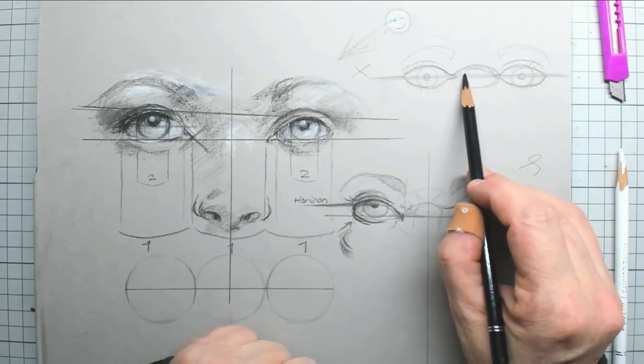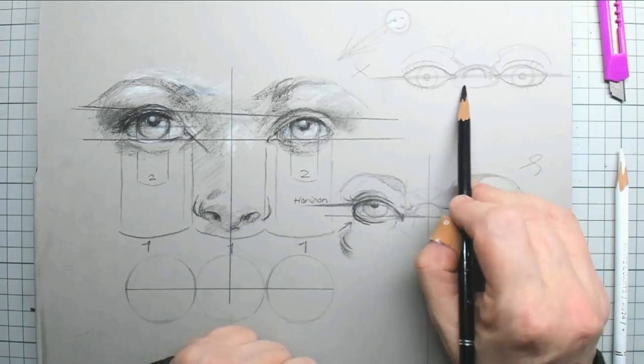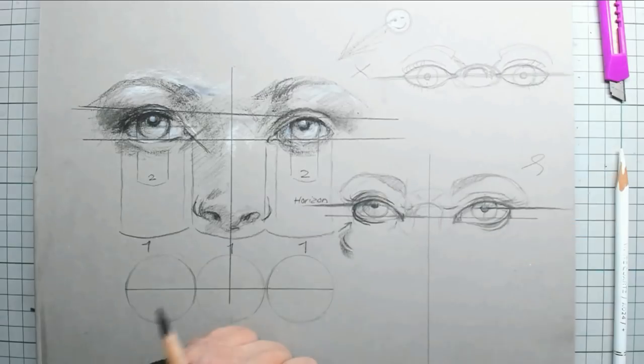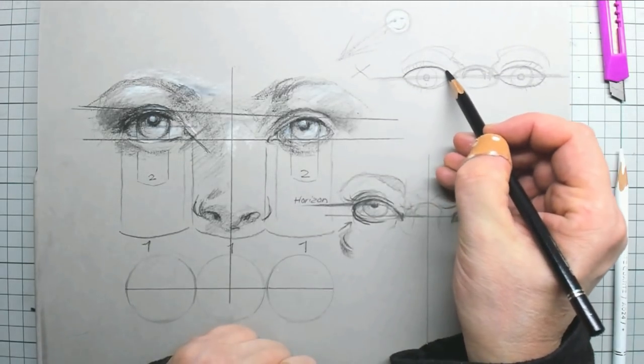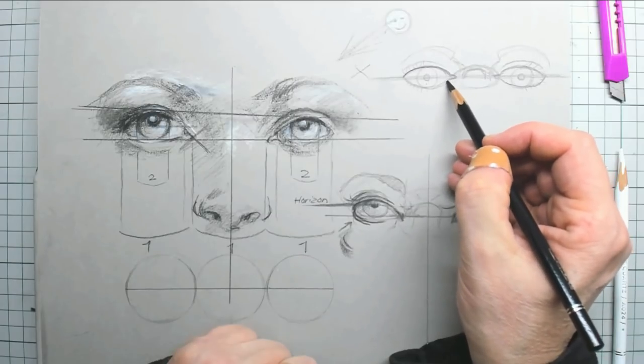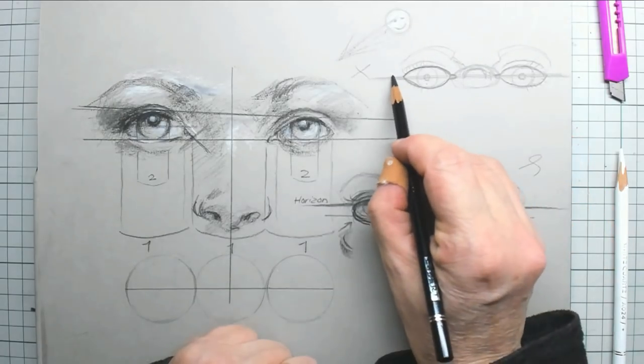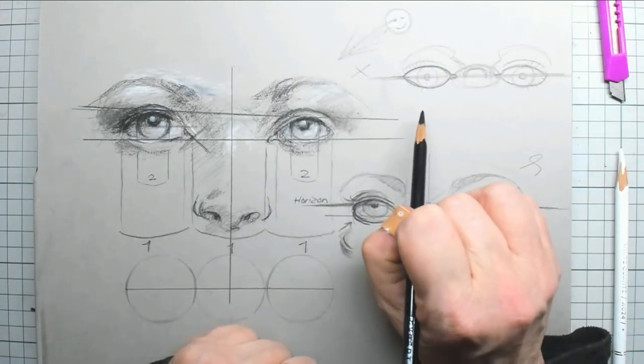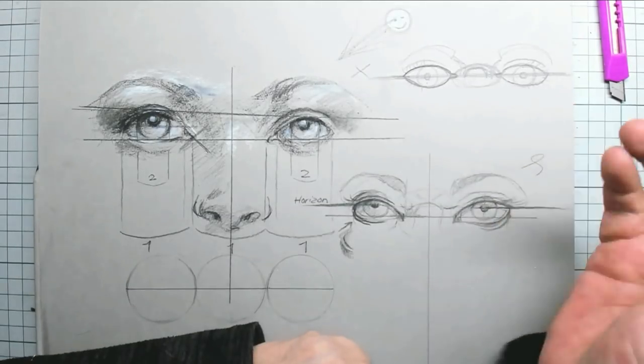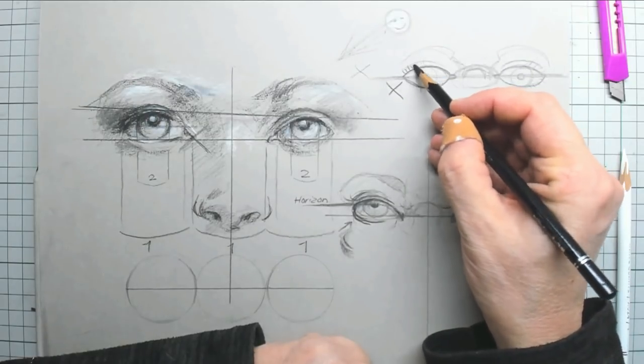But what is a very common mistake is that people draw the upper eyelid and then here comes the corner of the eye where the teardrops come and then they go around like this all on that horizontal line. That's not good. And a second mistake that people make is that they start drawing eyelashes from that line out.